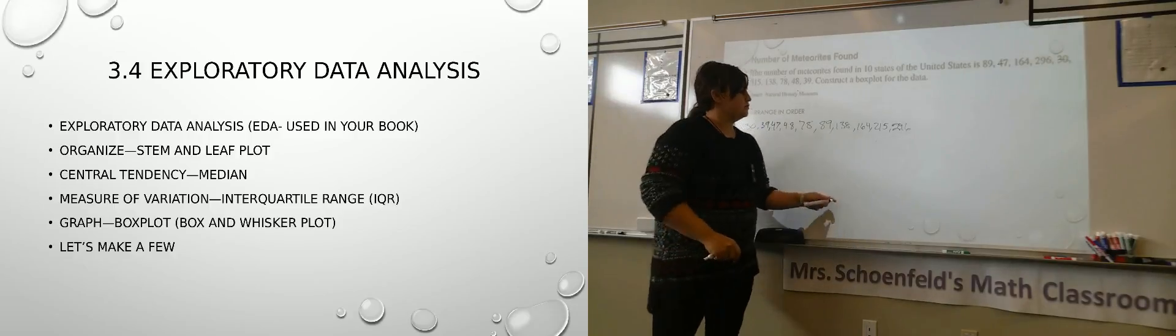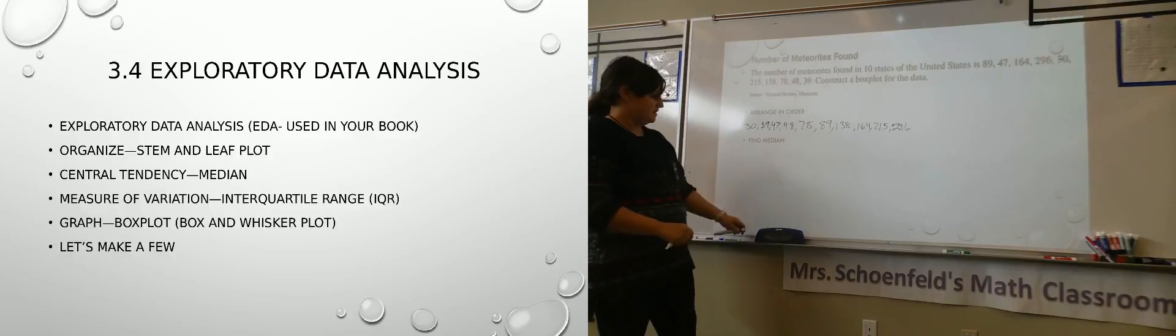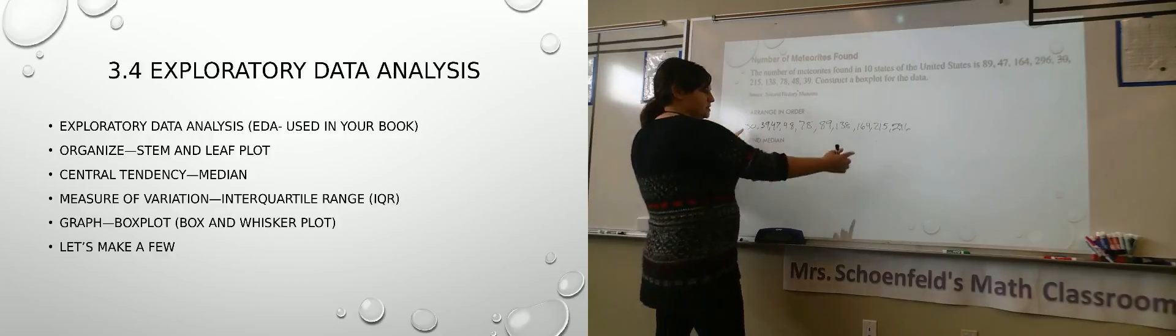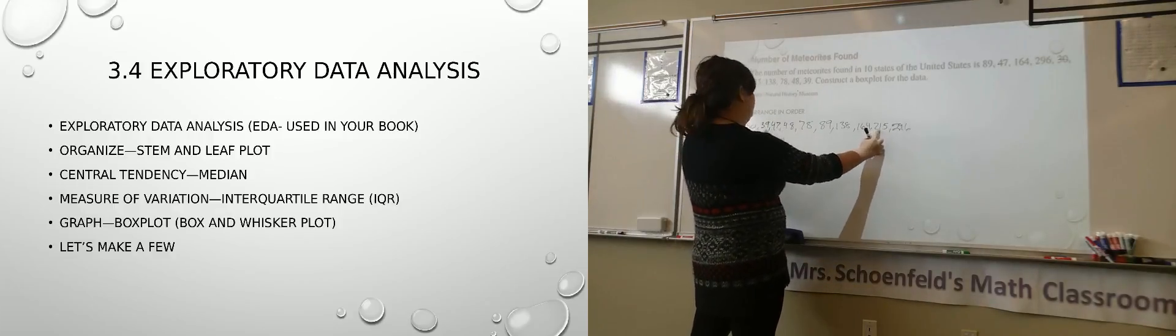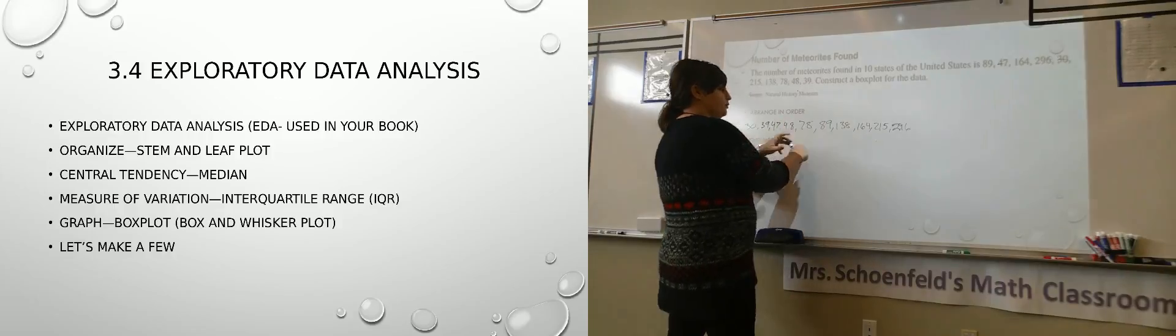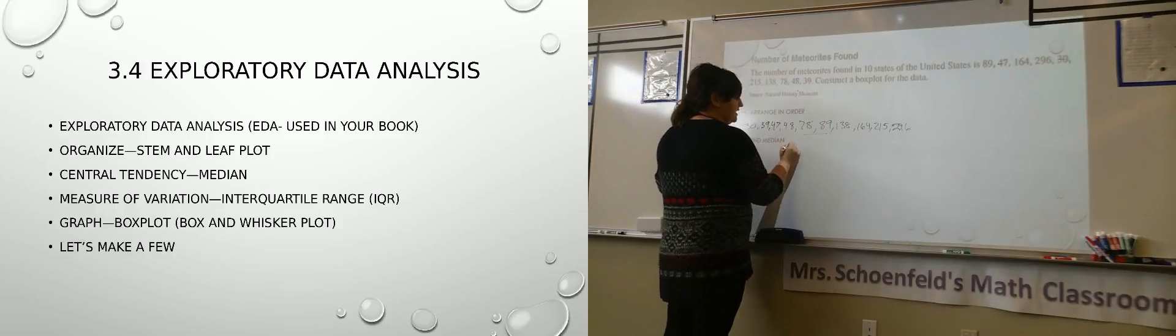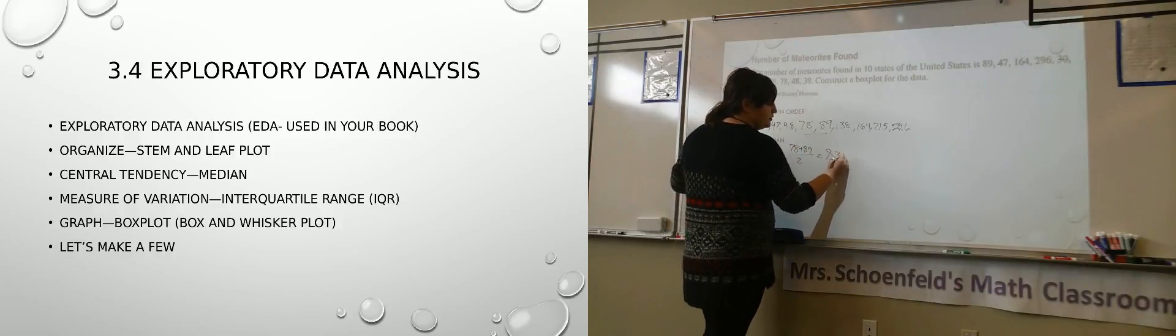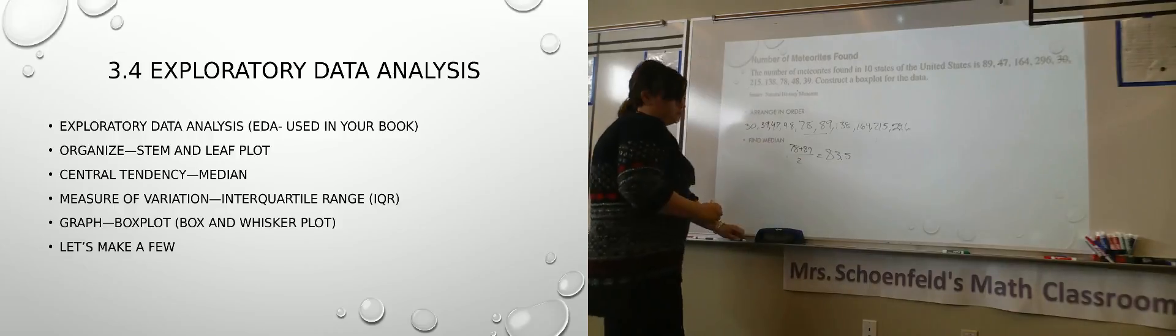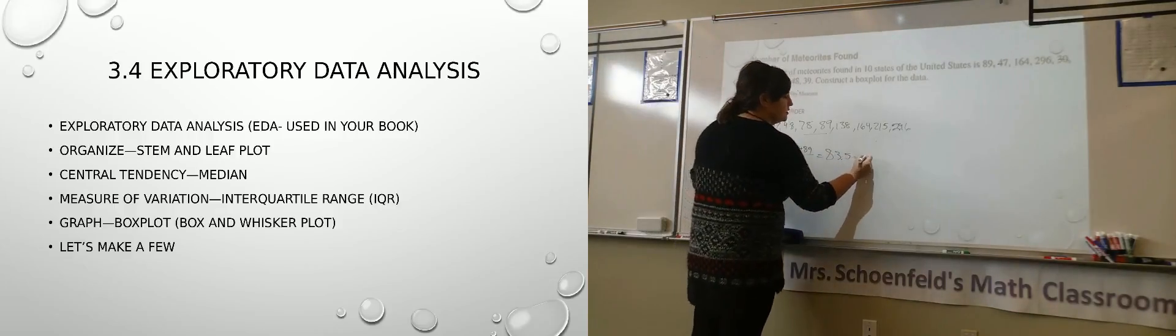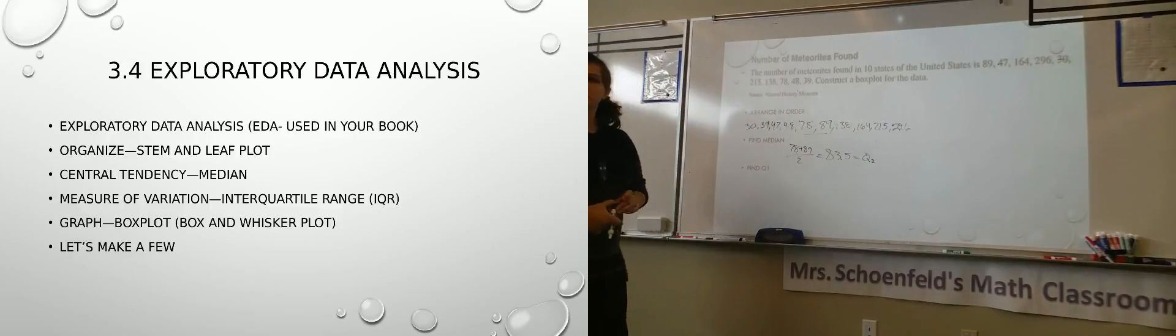The next thing we're going to do is to find our median. So our median is our middle number or our average of the two middle numbers if there's two middle numbers. So I count one off, two off, three off, four off, five off. So what's in the middle of 78 and 89? 83.5. So now that was our median, also called our Q2.